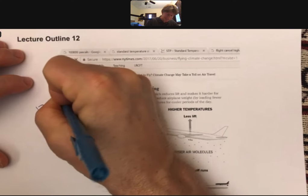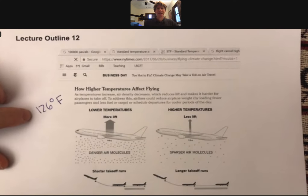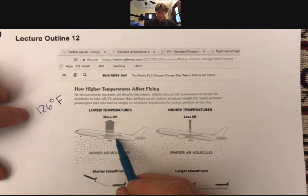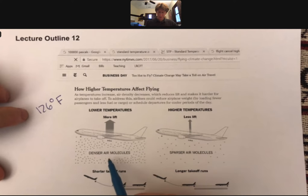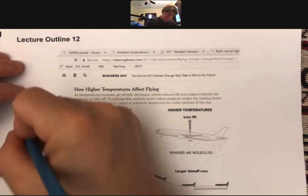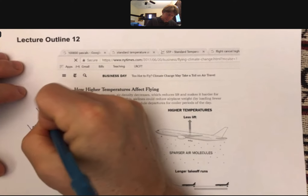And at that point, they were canceling flights. The reason they were canceling flights is because it was too hot. And so as the temperature increases, you get less dense air, and we will see that air is a gas.